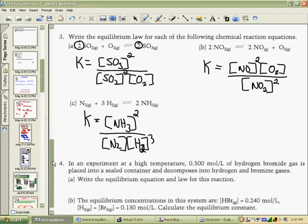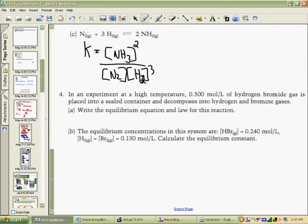Getting to the end of our sheet, question four. In an experiment at high temperature, 0.5 moles of hydrogen bromide is placed into a container and decomposes. Hydrogen bromide gas decomposes into its elements, which is hydrogen and bromine gas. Now that is an unbalanced equation, and now it is a balanced equation.